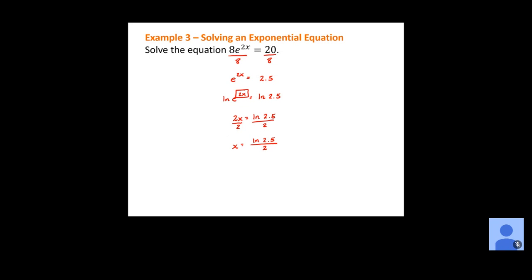If WebAssign asks you to round to a decimal place, put natural log of 2.5 divided by 2 in your calculator. Make sure you take the natural log of 2.5 first and then divide that by 2 — we're not dividing the 2.5 by 2, but the entire natural log by 2.